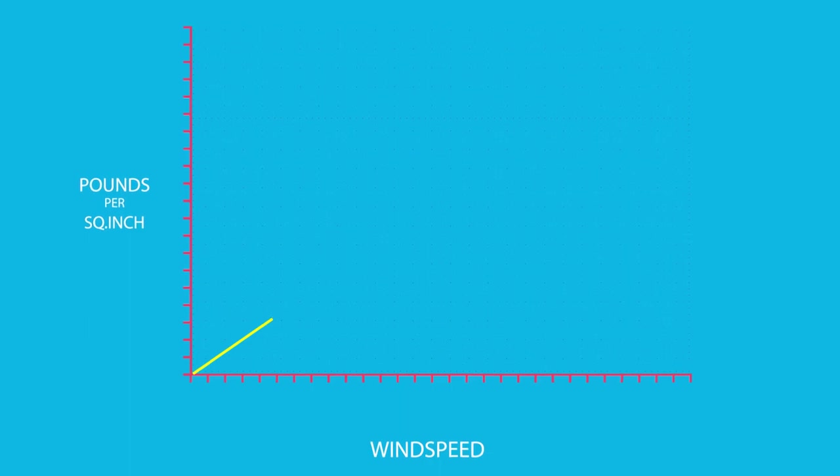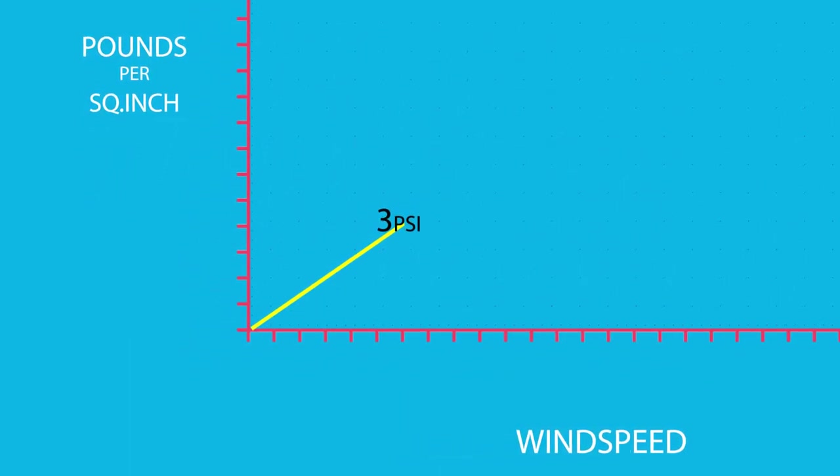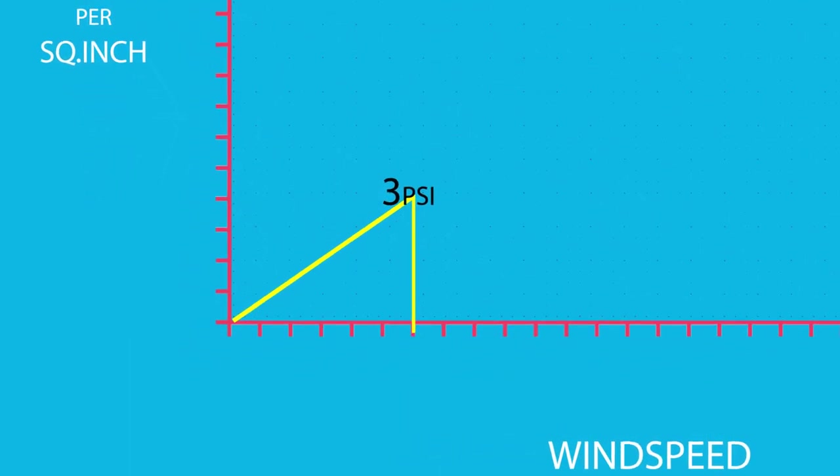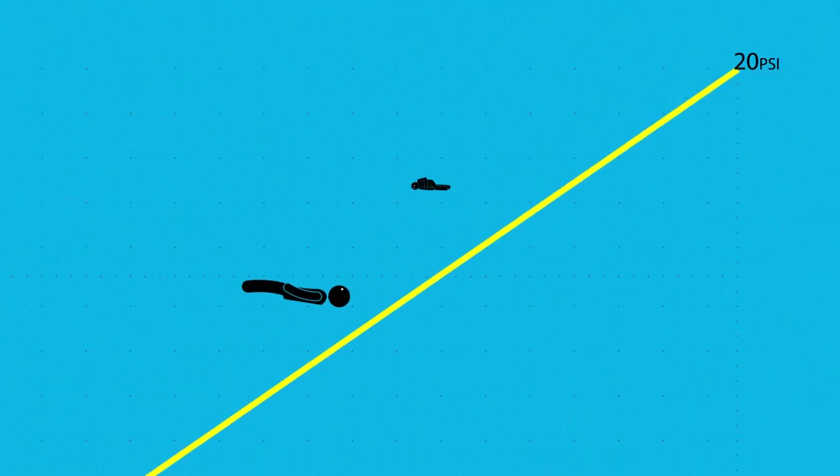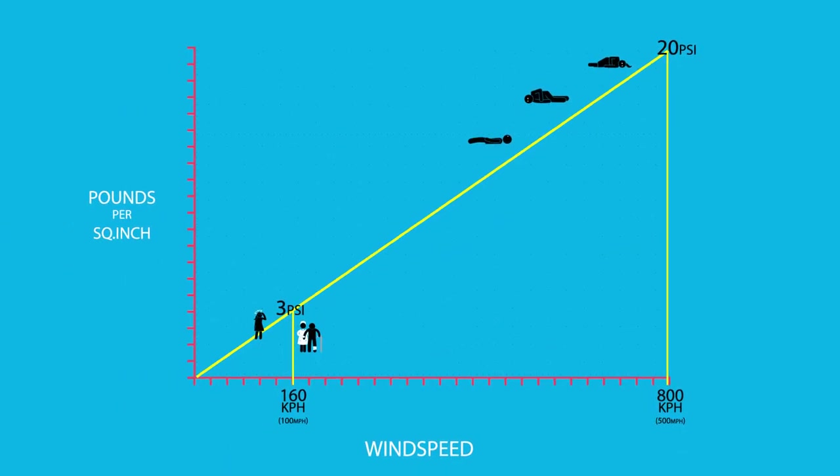It's also worth bearing in mind that from 3 psi of overpressure or below, wind speeds would peak at 160 kilometers per hour. And while serious injuries might be common, the risk of dying is reduced.